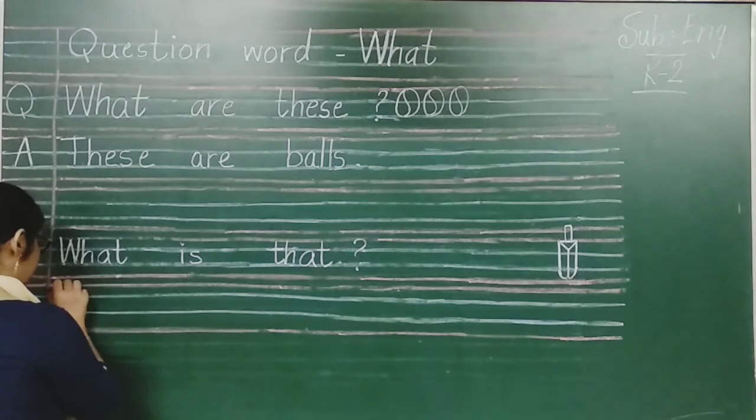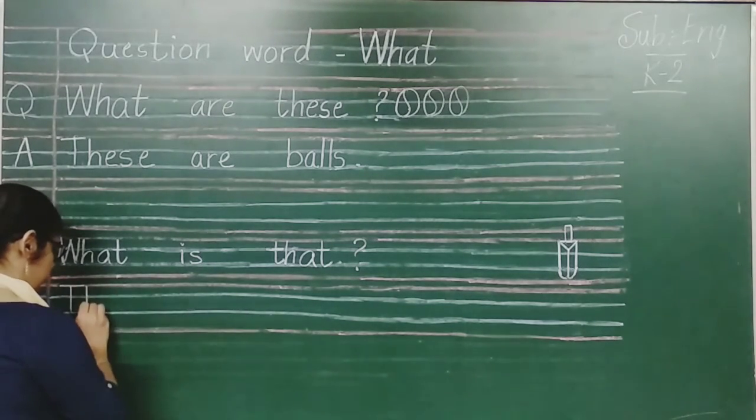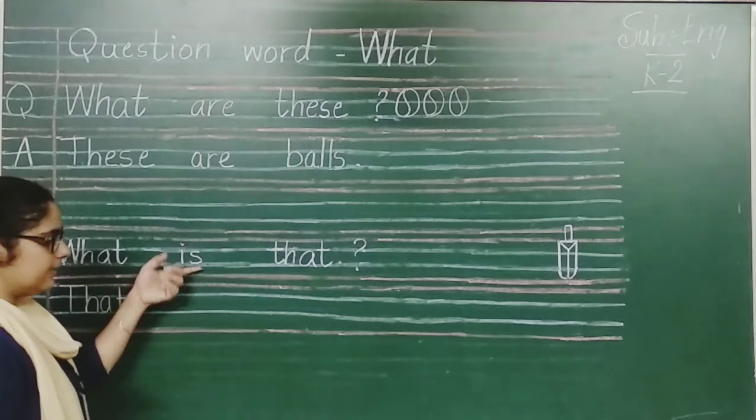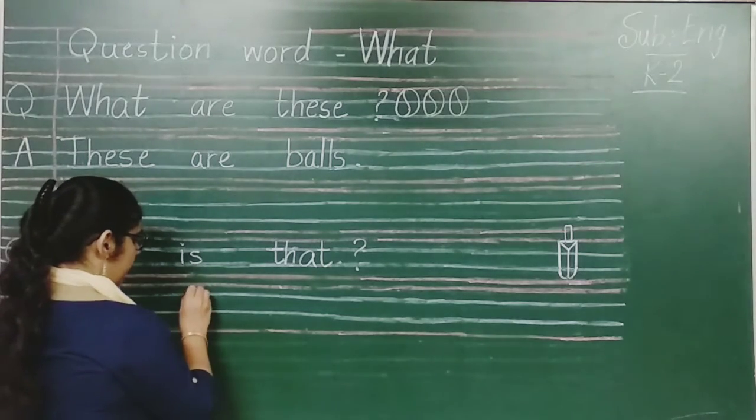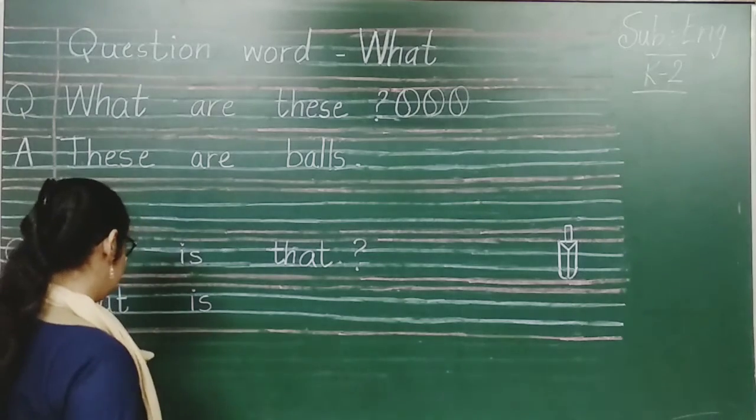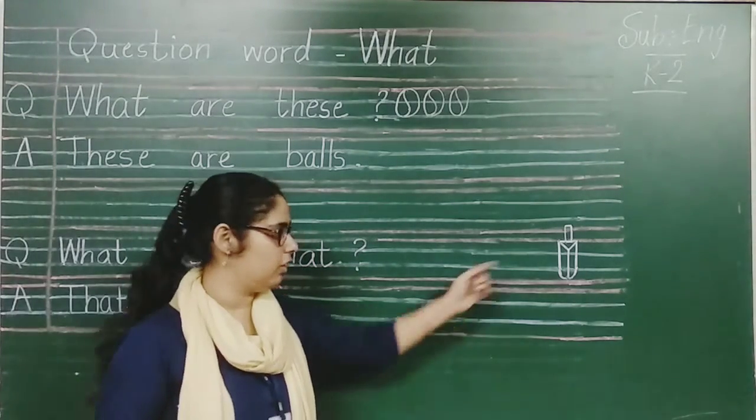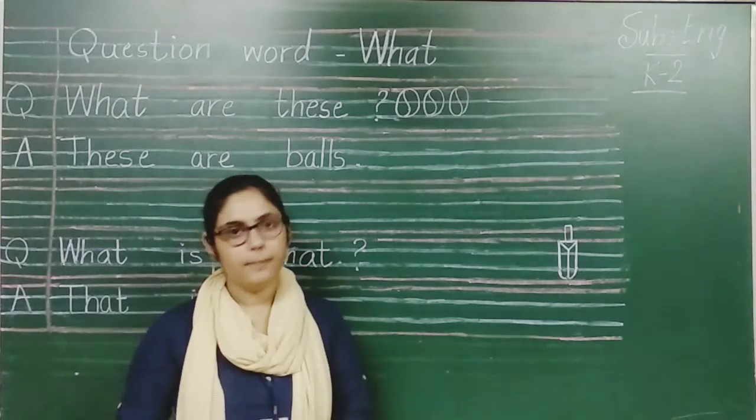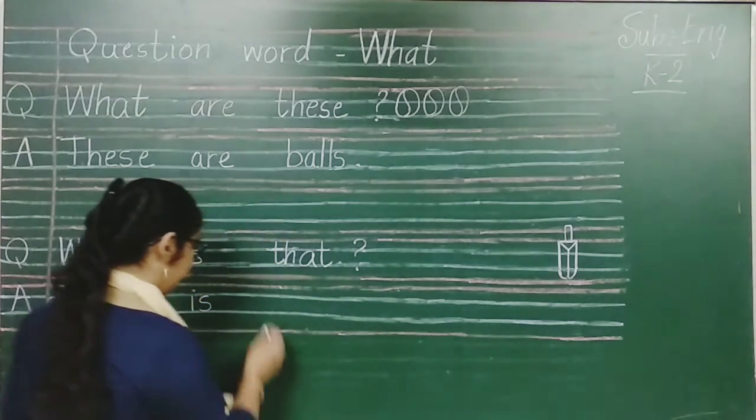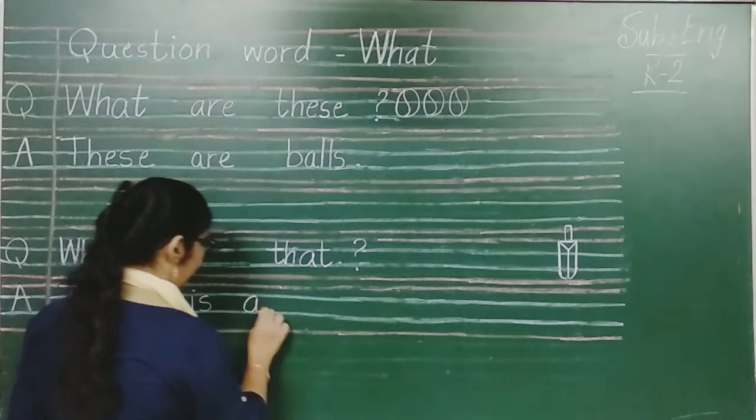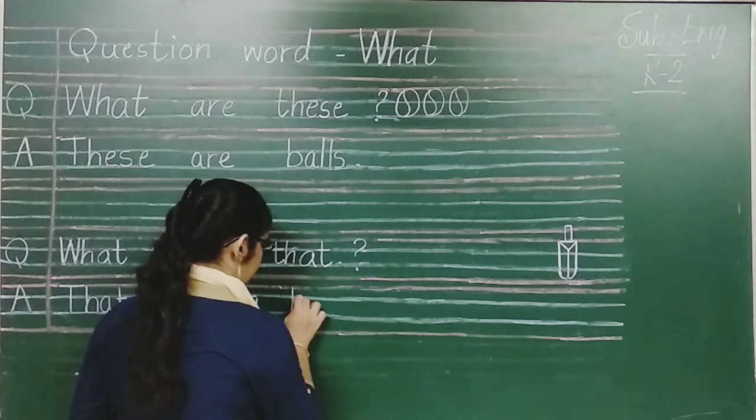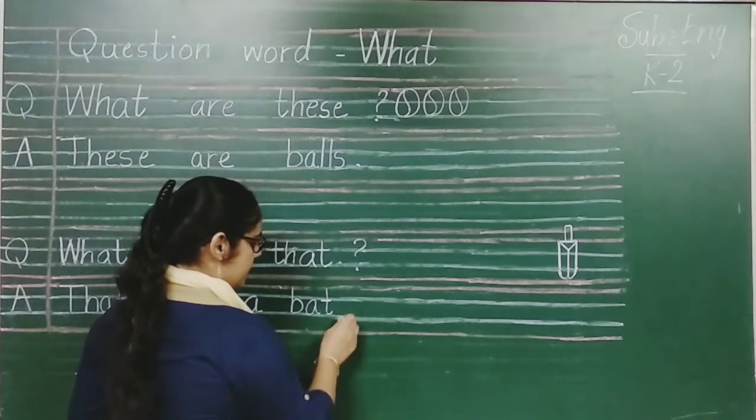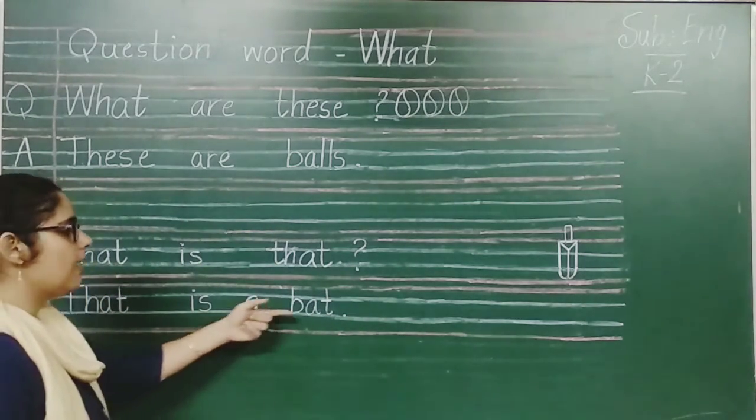So first letter should be capital. T h a t that. That is. Now we have to use article because this is only one. Bat. This is the bat. Bat starts from B, so we have to use article A. A bat. B a t bat. And full stop. That is a bat.